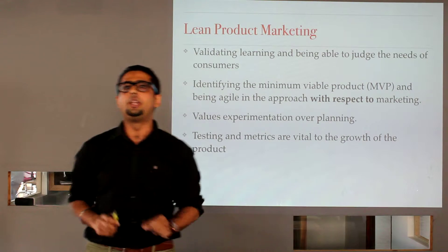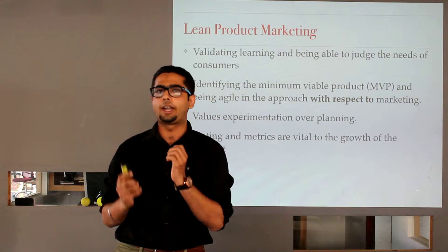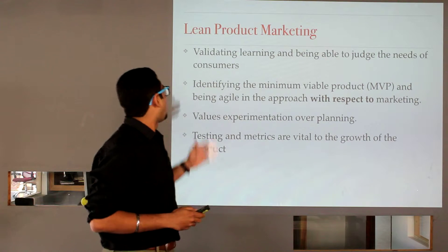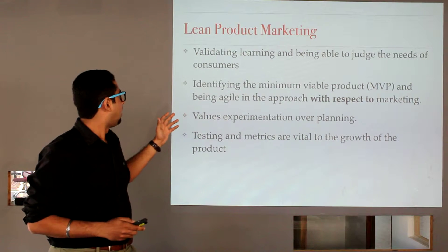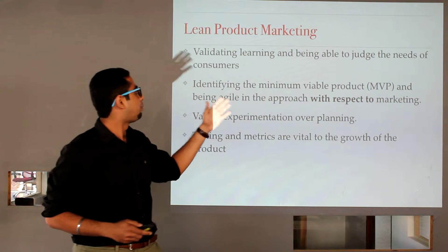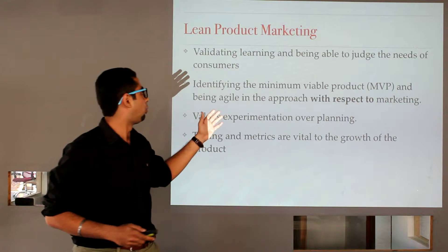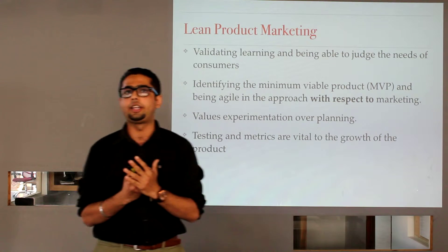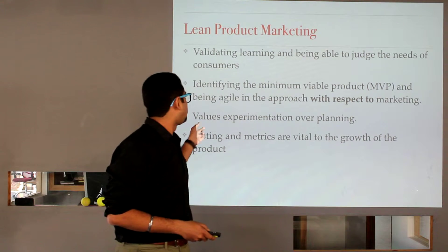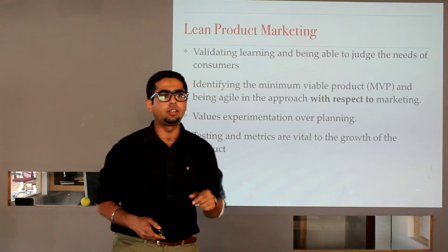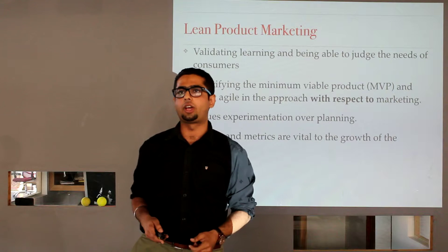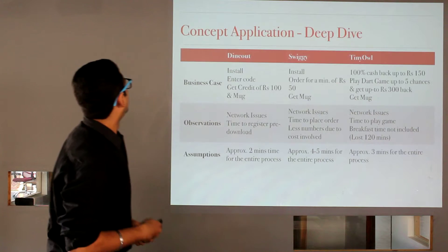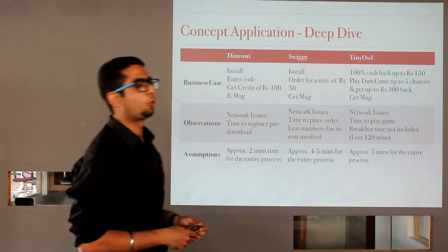So, I'll get into a bit of theory before I can explain it to you in a more practical aspect. Validating learning and being able to judge the needs of consumers. Identifying the minimum viable product and being agile in the approach with respect to marketing. Values experimentation over planning. Testing and metrics are vital to the growth of the product. So, let's apply this concept.